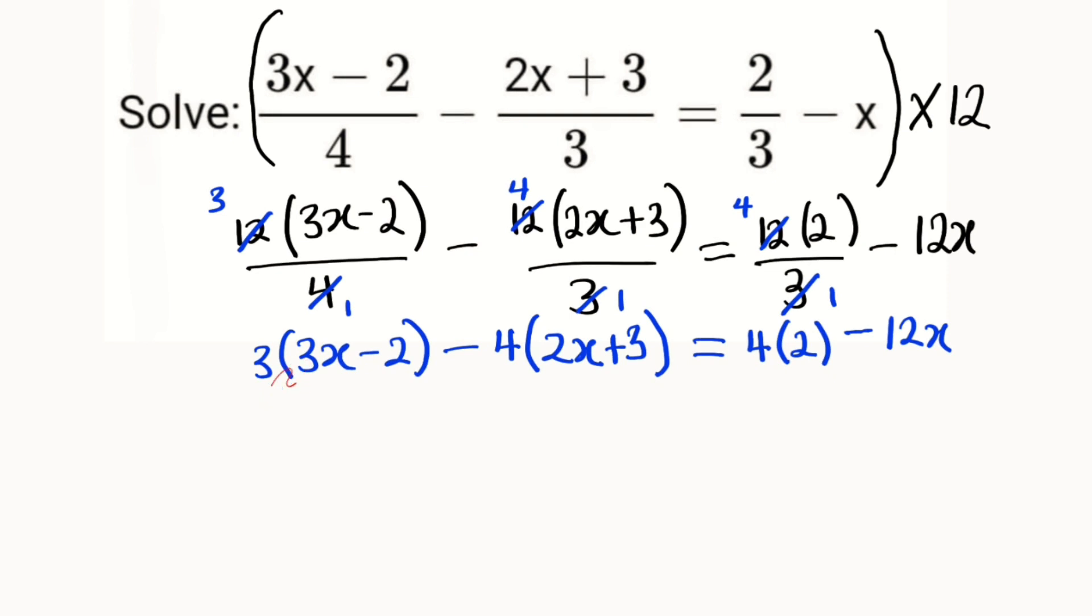Gradually, we use these numbers outside the bracket to expand. 3 multiplied by 3x is 9x. 3 multiplied by negative 2 is negative 6. Negative 4 multiplied by 2x is negative 8x. Negative 4 multiplied by 3 is negative 12.